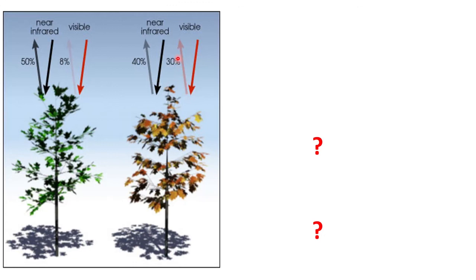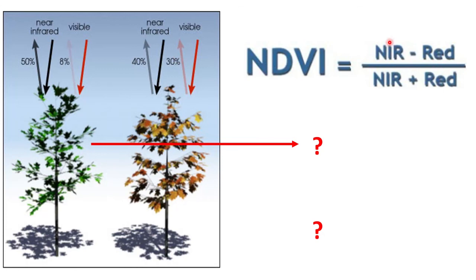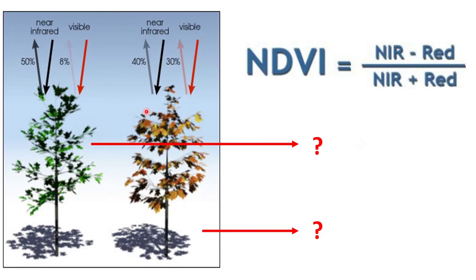The NDVI formula is: NDVI = (NIR − Red) / (NIR + Red). For the healthy plant: NDVI = (50 − 8) / (50 + 8). For the unhealthy plant: NDVI = (40 − 30) / (40 + 30). Calculate these values and based on the NDVI, we will know the health condition of our vegetation. When observing from thousands of miles away, NDVI tells us which parts of the field are healthy and which are not.